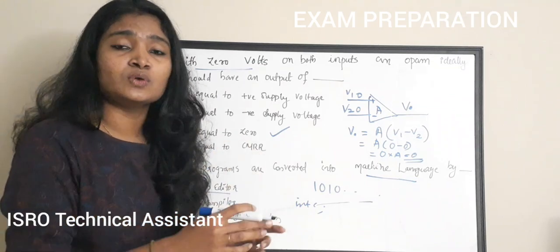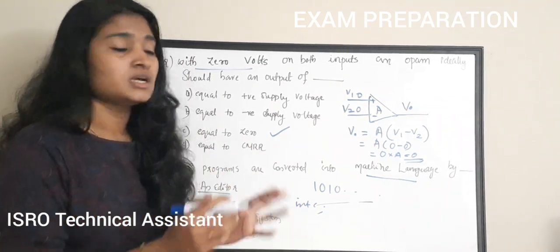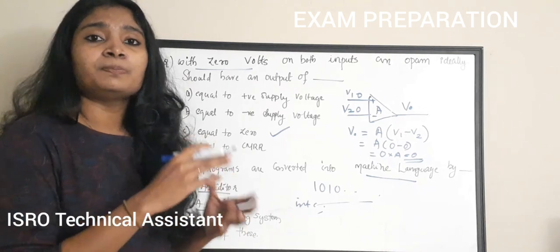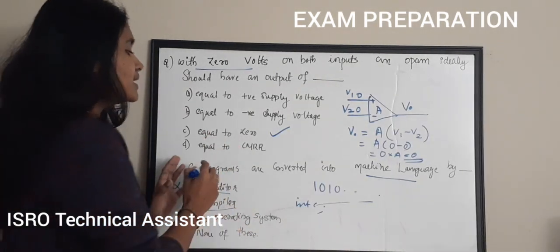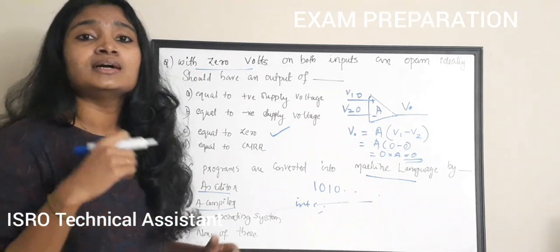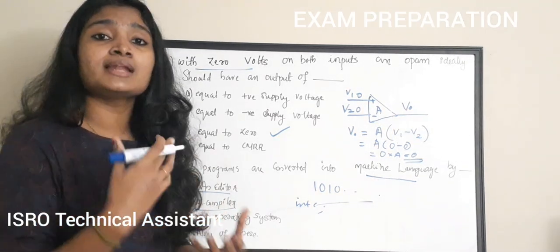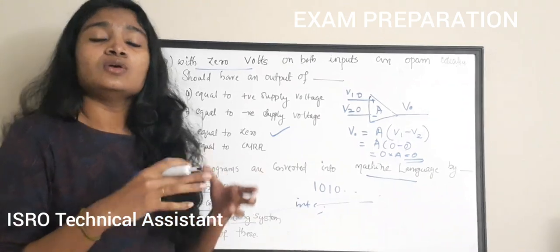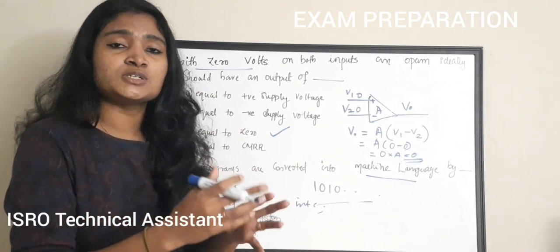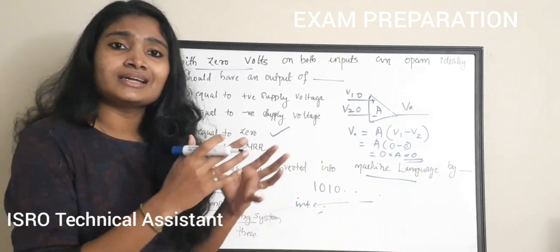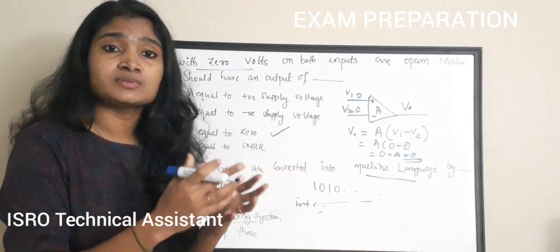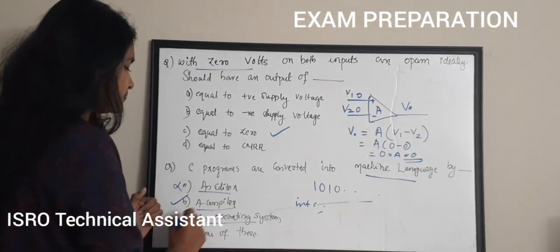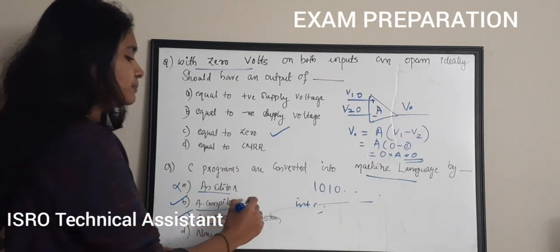An editor is where we type and edit programming code, so it does not do conversion. A compiler converts high-level C programs into machine-understandable ones and zeros — machine language. The correct answer is option B, a compiler. An operating system is the linkage between hardware and software; it controls all operations but does not convert programs.